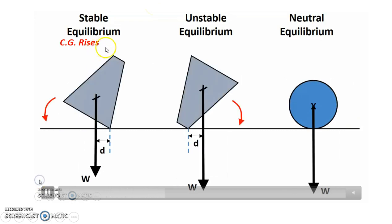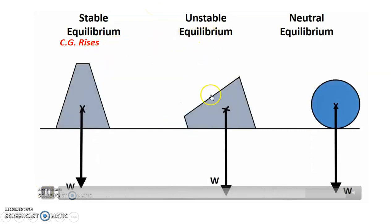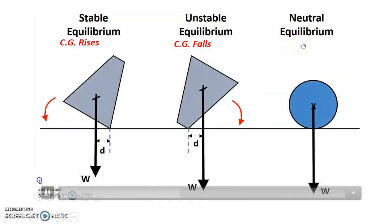What about unstable equilibrium, what can you say for the center of gravity? If I tilt it slightly, can you see? It actually falls. So the CG falls for unstable equilibrium.